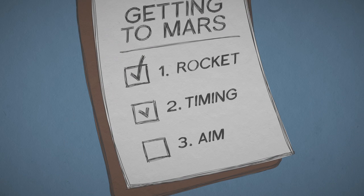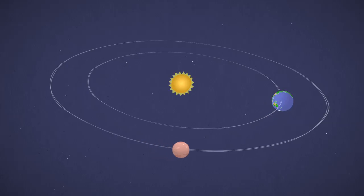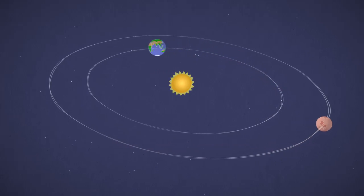Next, make sure you launch at the right time. Mars and Earth orbit the Sun at different speeds and distances. Sometimes they're really far apart, and other times they come closer together.